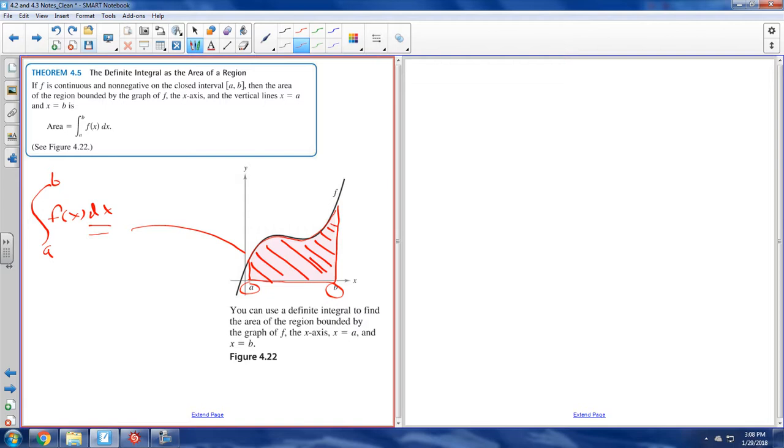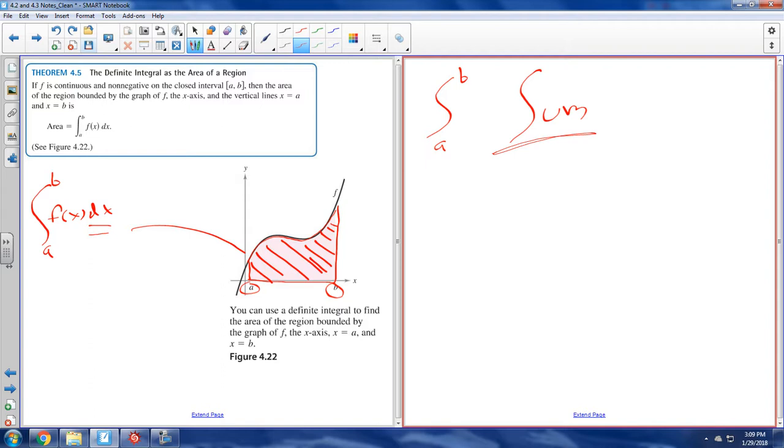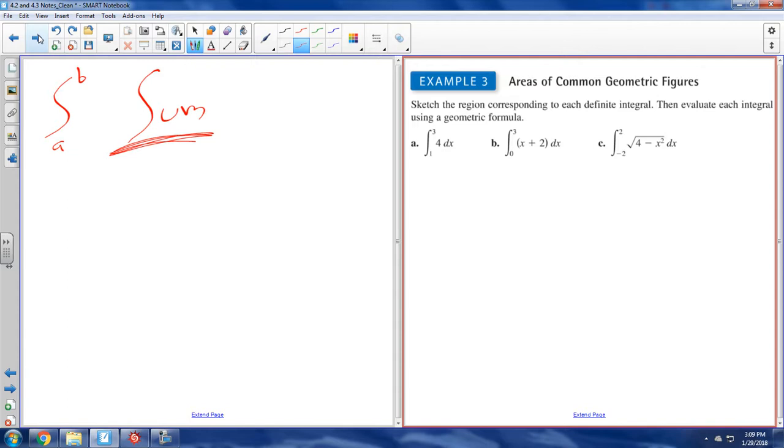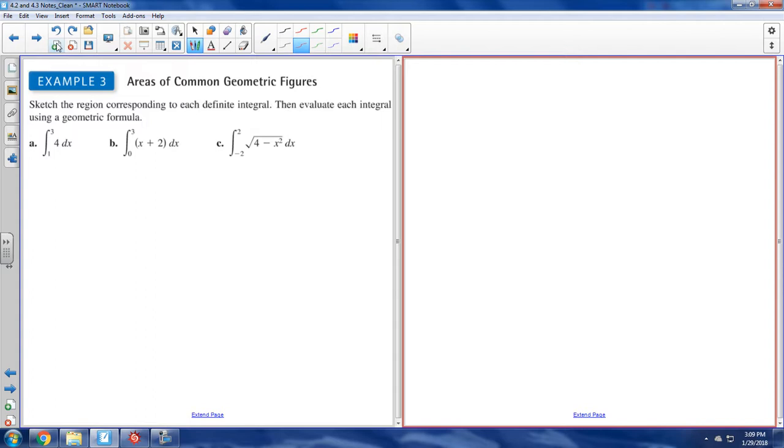And the area, if it's below the x-axis, actually comes out negative. I don't know that we're going to get into that today, but that would actually come out negative. So let's kind of talk about some properties. This is important because this integral symbol here, it kind of looks like an S, doesn't it? And it really means the sum. You're adding up all of those bars. You're adding up a million, billion, trillion, you're adding up infinite bars to get the exact area underneath the graph.